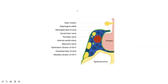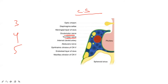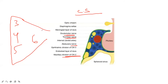This is the cavernous sinus. Just remember: nerves 3, 4, and 5 pass through it on the lateral aspect. The sixth nerve passes through the body of the sinus. There is also the internal carotid artery. These are the nerves passing through the cavernous sinus.